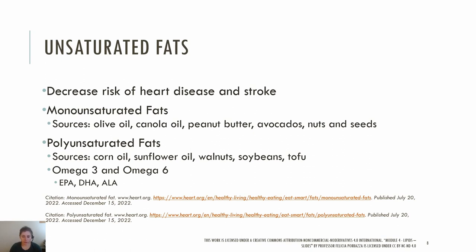There are three main omega-3s: ALA, EPA, and DHA. ALA is primarily in plant oils, and DHA and EPA are found in cold water fish and other seafood. EPA and DHA have been shown to help reduce blood triglycerides and blood pressure, reduce inflammation, and prevent blood clot formation. They also promote normal growth and development in infants, especially in the development of the brain and the eyes. Both of these important omega-3s can be synthesized in the body from ALA, so they are not considered essential fatty acids. However, the rate of conversion of ALA to these omega-3s is limited.